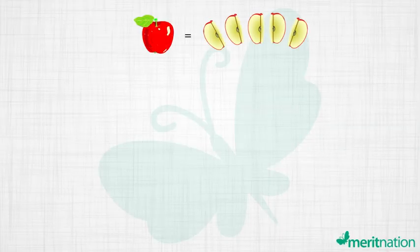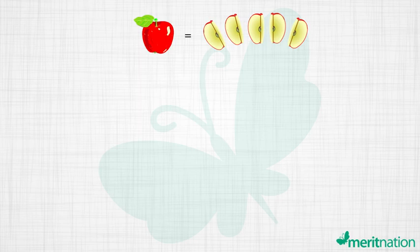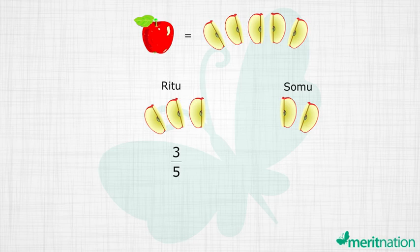This is the apple that they start with. The part eaten by Ritu is this, can you see that? This is 3/5. The remaining apple is what Somu eats, so this was one apple minus this.